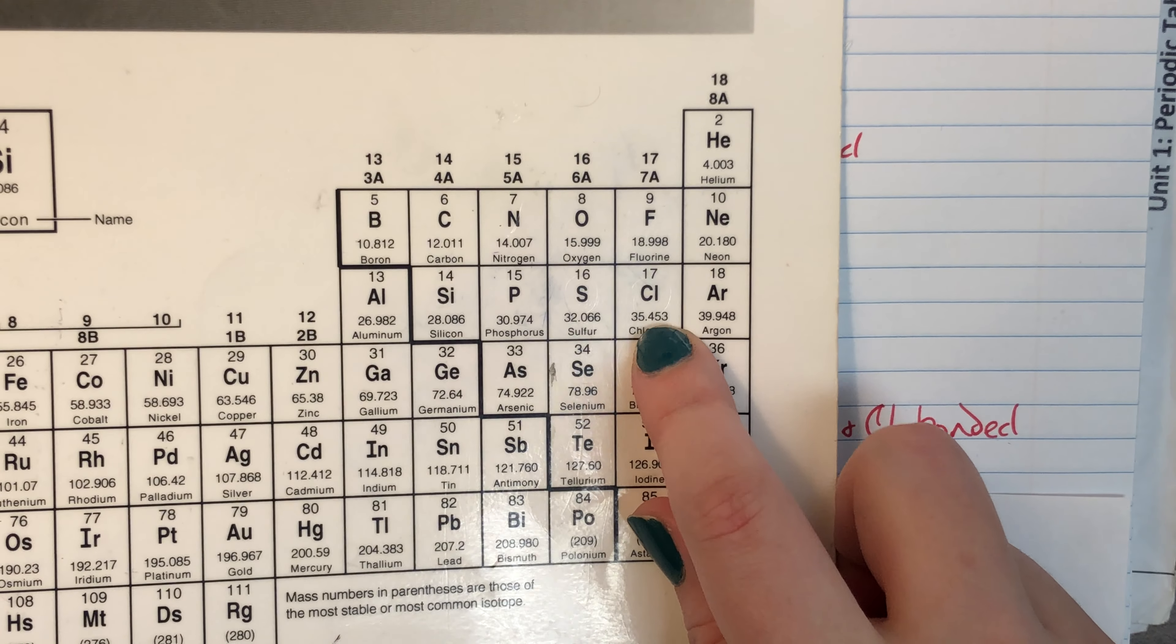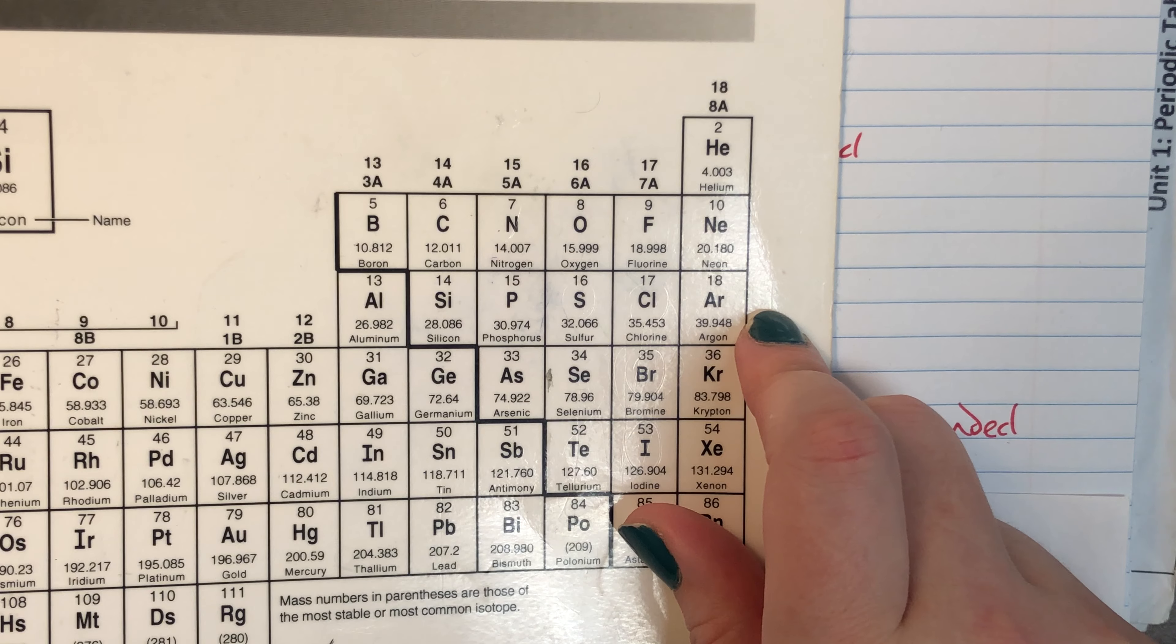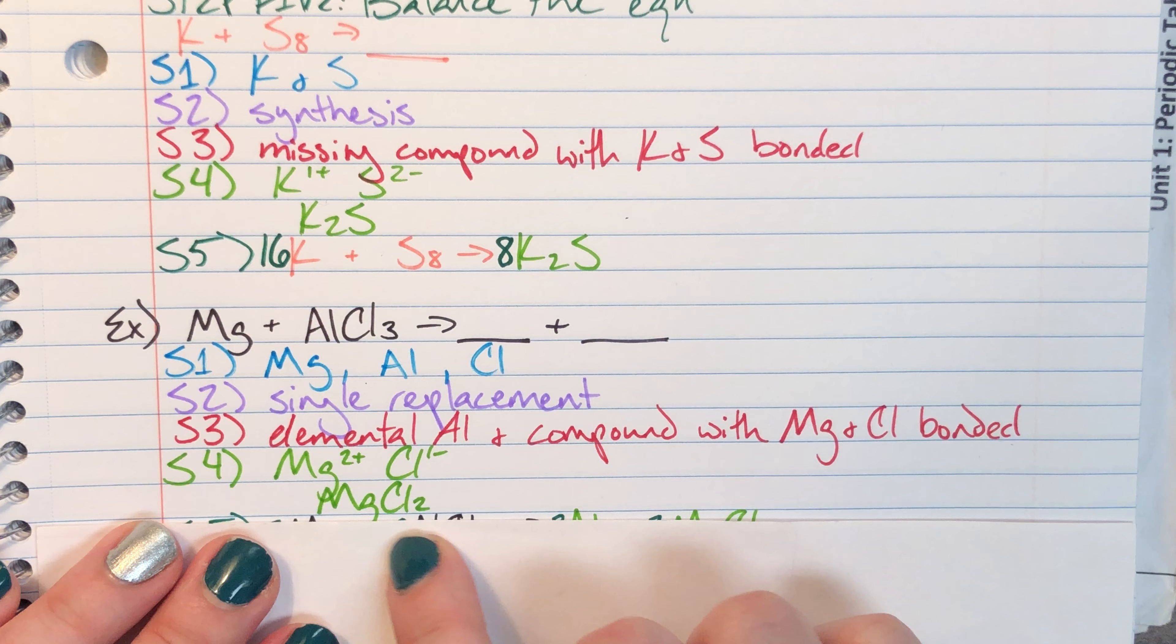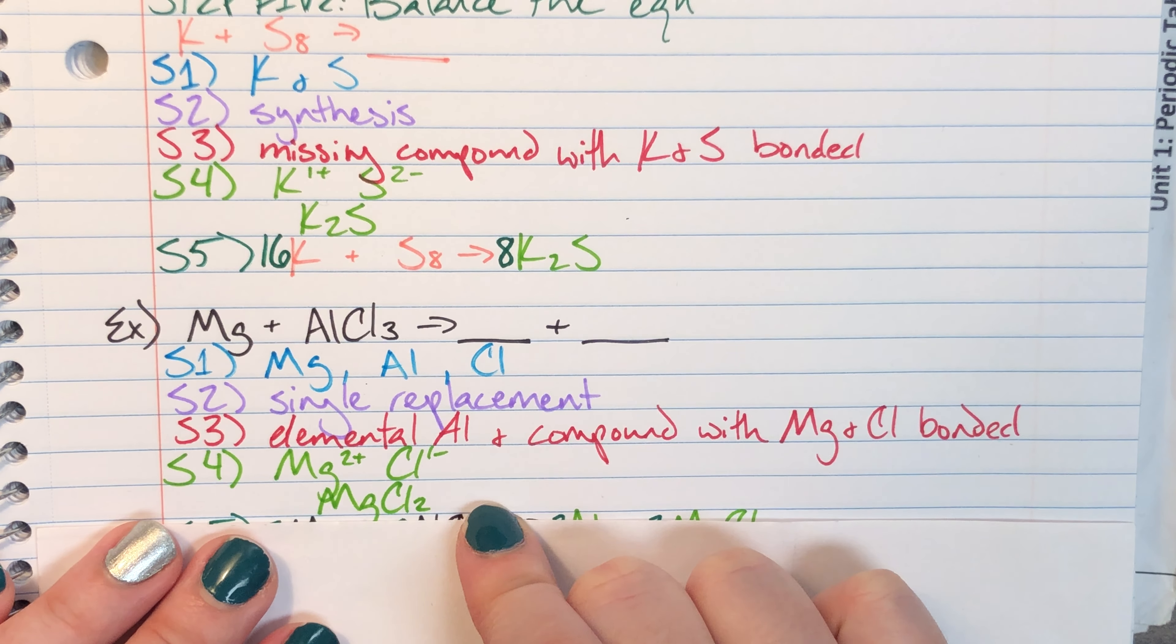Chlorine, being in column seven, has seven valence electrons meaning it will steal one electron to get to eight, so it's going to have a negative one charge. When I write down that formula, I'm going to exchange charges for subscripts. So my formula for the magnesium chloride molecule will be MgCl2.